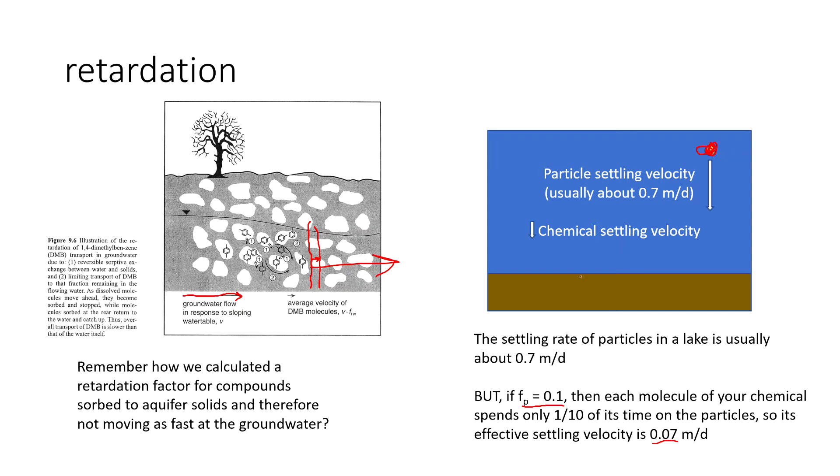Now, let's say that your lake happens to make the math easy. Let's say your lake happens to be 7 meters deep. Well, this is a velocity just like if you were driving your car at 0.7 meters per day. So if your lake is 7 meters deep, it's going to take you 10 days for the particle to settle. But if your chemical only has an effective particle settling velocity of 0.07, instead of taking 10 days, it's going to take 100 days to effectively settle out of that system.